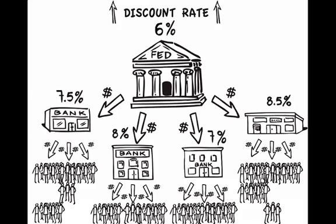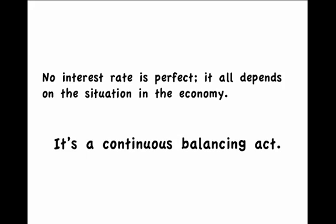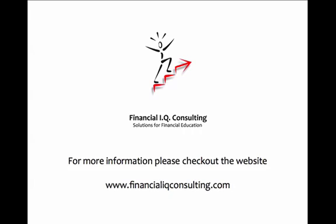So that's it. You just learned how the Federal Reserve uses the discount rate as a tool to maintain stability in the economy. The truth is that there is no perfect discount rate. The Fed's job is to lower and increase the rate depending on what is needed in the economy at a moment in time — it's a continuous balancing act. Hopefully you enjoyed the presentation. Once again, this is Alex Nerghizian with Financial IQ Consulting. Thank you for listening.